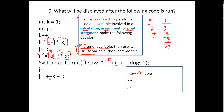Next we have a prefix increment operator as part of a calculation and an assignment. Since the increment is before the variable, we increment K first — it becomes 6 — and then use it. J is 23, so 6 plus 23 is 29, and that gets assigned to J.